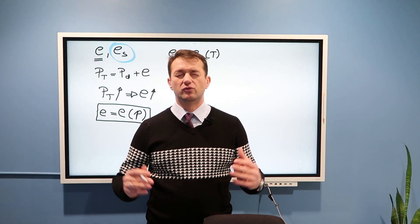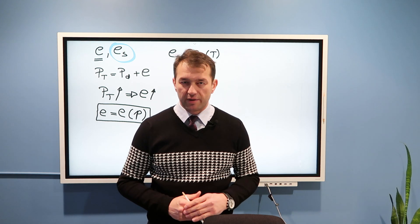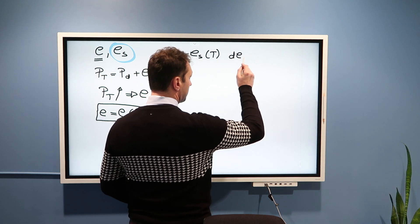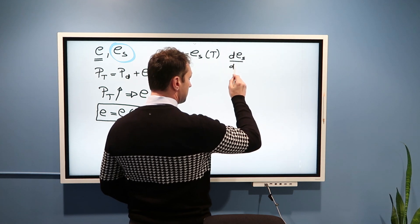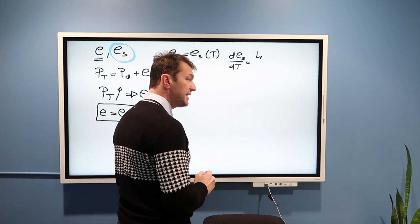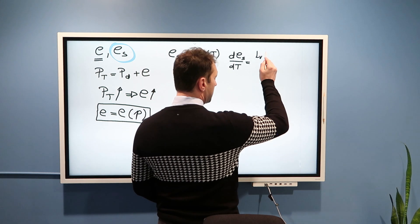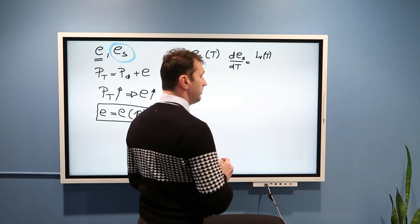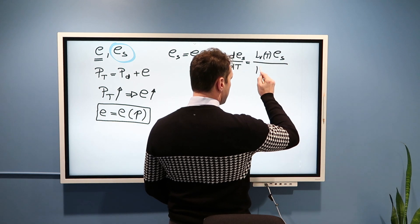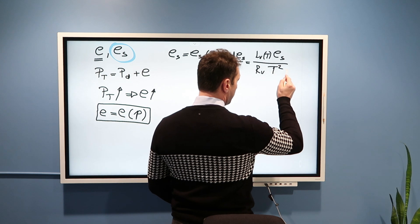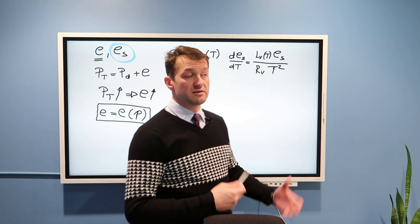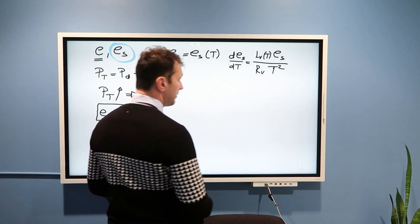And the powerful Clausius-Clapeyron equation says that it's a differential equation, that dES/dT is equal Lv, which is latent heat of water evaporation, which turns out also a little bit depends on temperature. And then, here, we have ES divided by Rv times T squared, where Rv is gas constant for water vapor, 461 joules per kilogram per Kelvin.